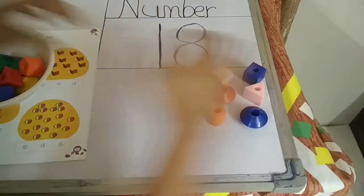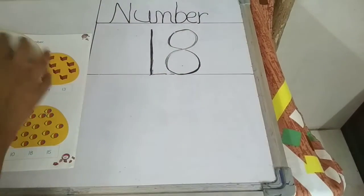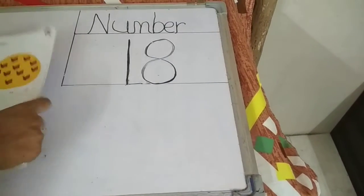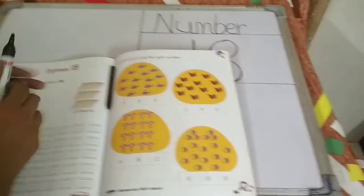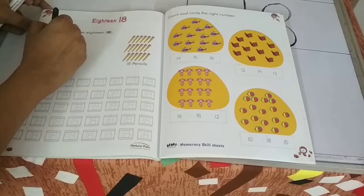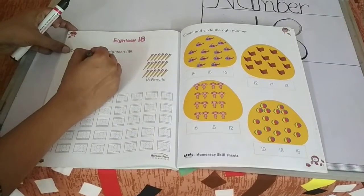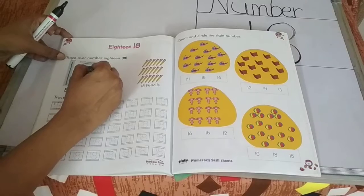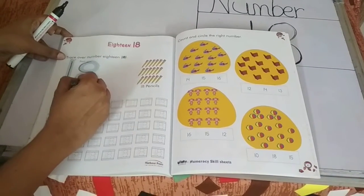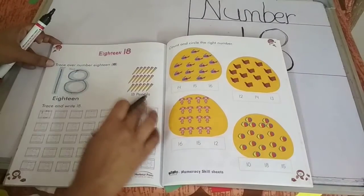You will get your number 18. Number 18. First, we are going to trace this. A standing line. Number 1. And an S pattern. And reverse S pattern. Number 8. 1, 8, 18.